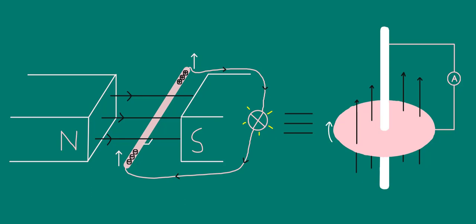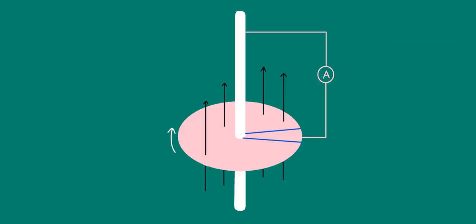In other words, both these situations are examples of a conductor cutting across magnetic field lines.